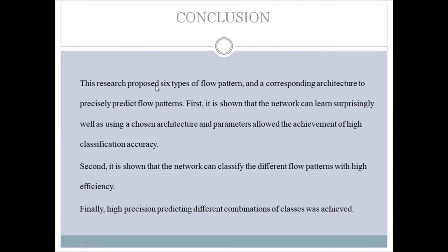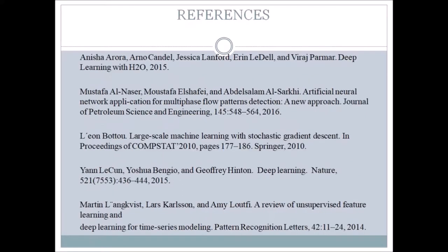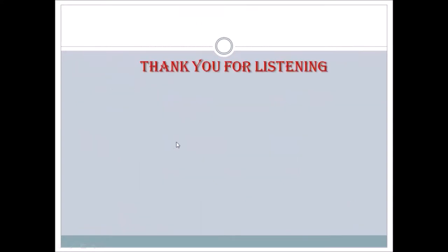Conclusion: this paper proposes six types of flow patterns and a corresponding architecture to precisely predict flow pattern. First, it is shown that the network can learn surprisingly well using chosen architectural parameters, achieving high classification accuracy. Second, the network can classify different flow patterns with high efficiency, and finally, high-precision prediction of different combinations of classes is achieved. These are the journals and literature books referenced for this work. Thank you for listening.